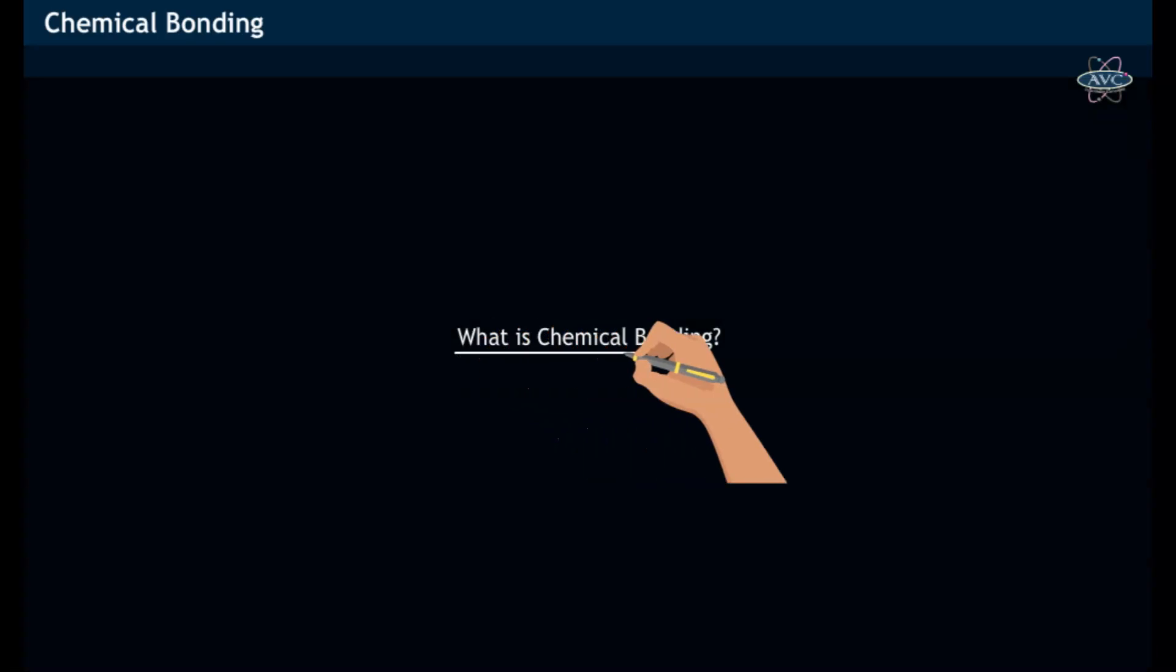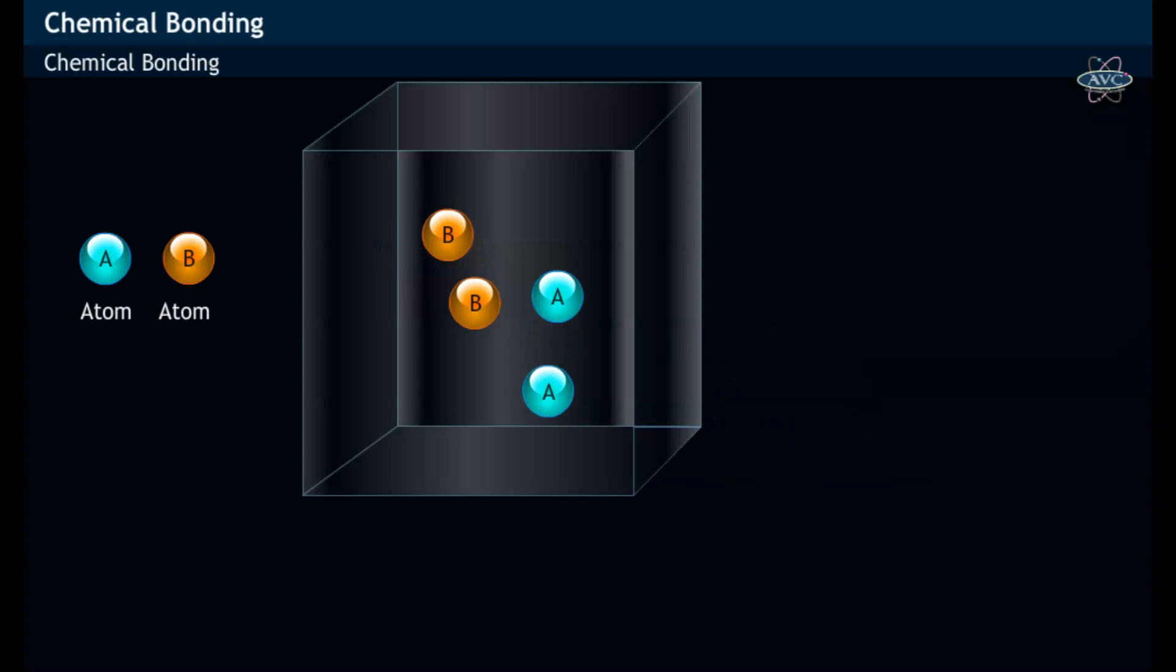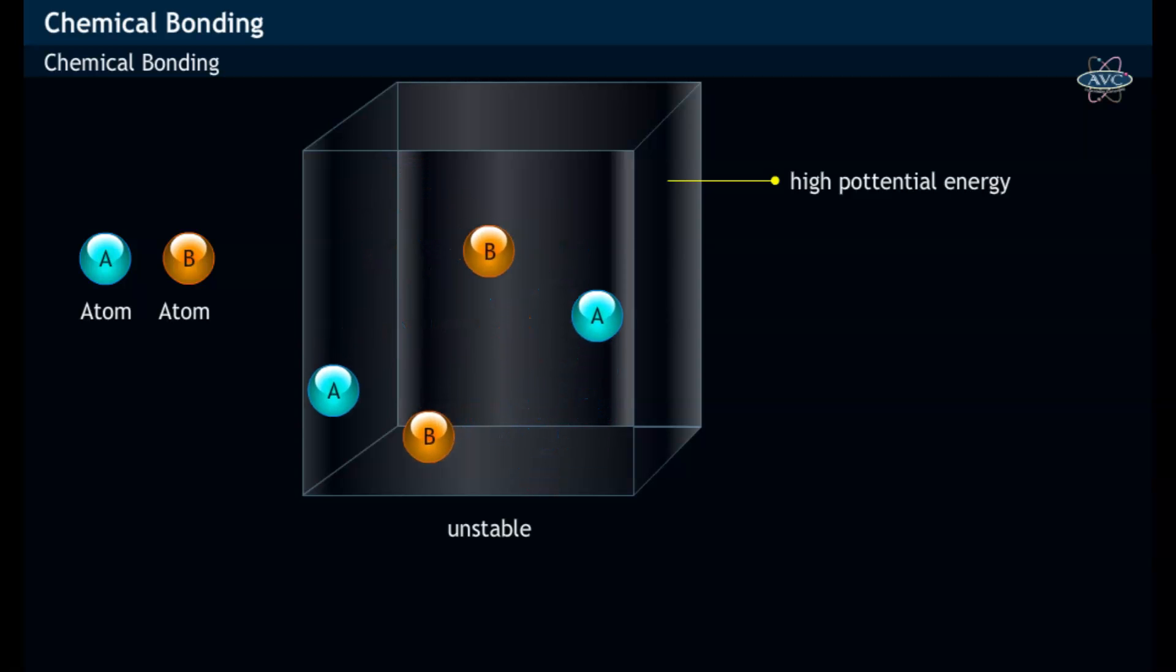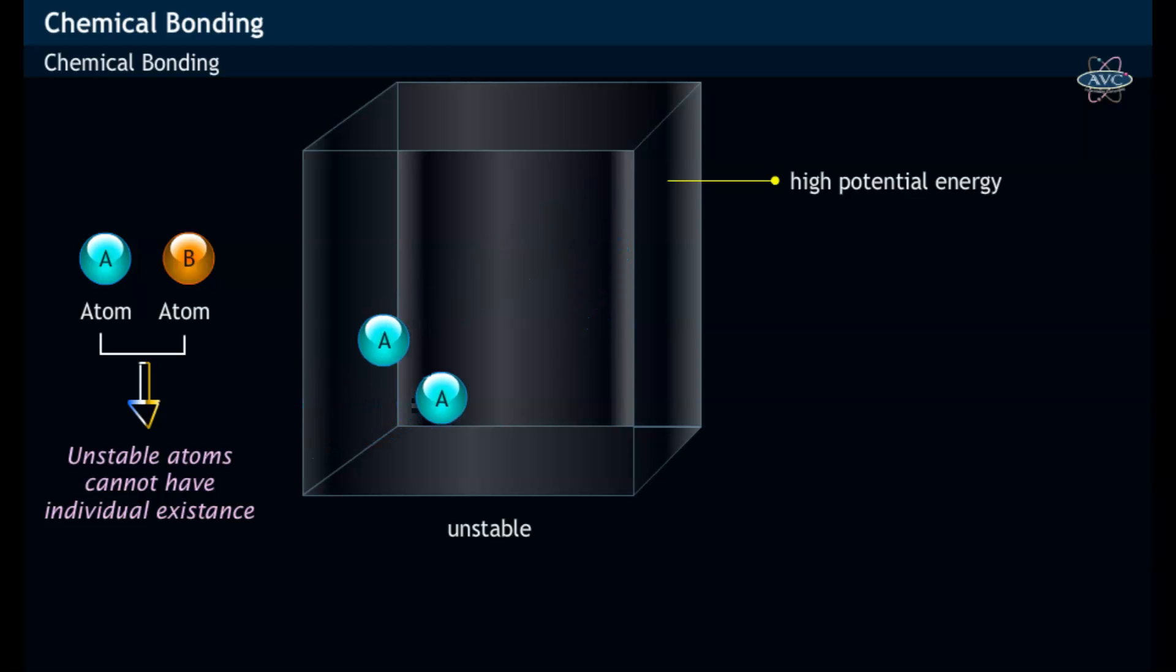What is chemical bonding? Atoms in their original state have high potential energy that is unstable in nature and rarely capable of individual existence.